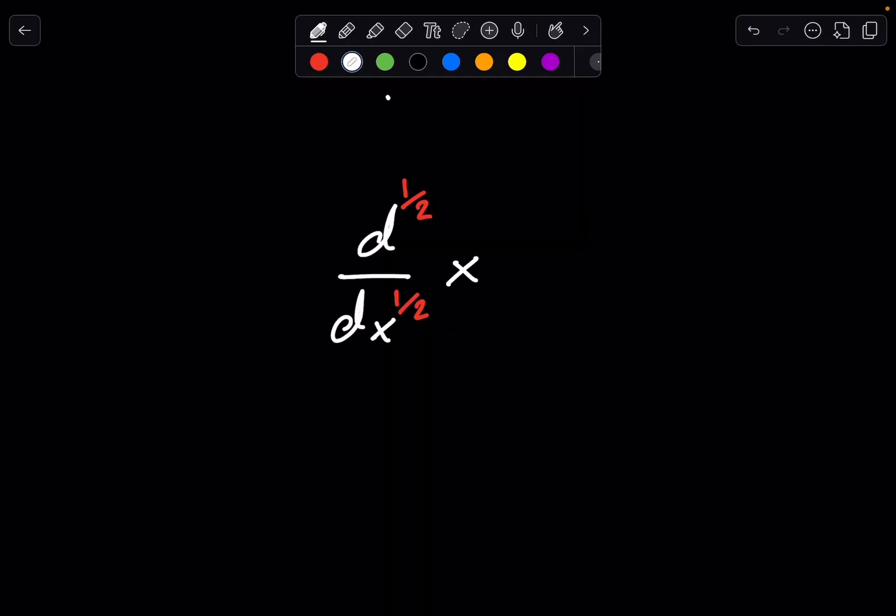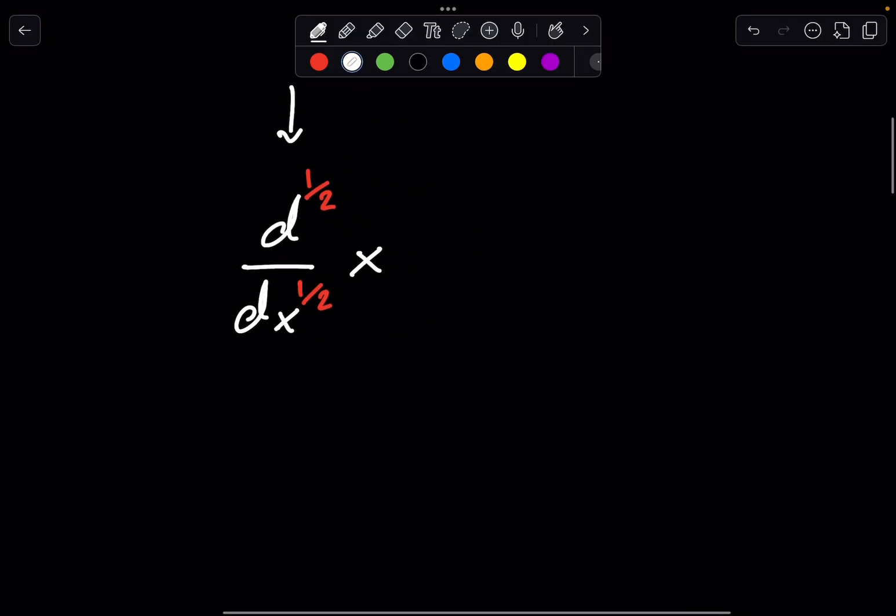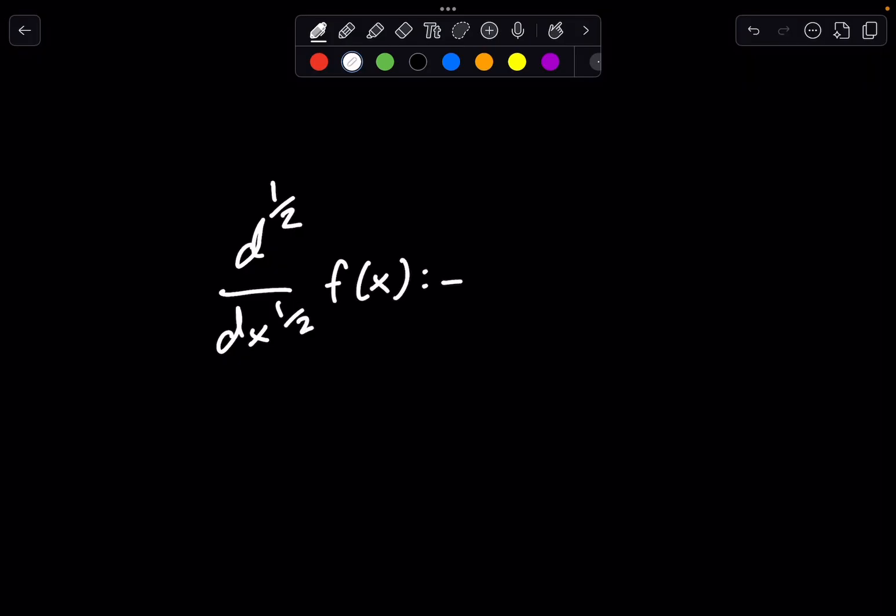Now, a man named Riemann has done a lot of stuff in calculus, but he also created a definition for cases like these, and it's called the Riemann-Liouville definition. I apologize if I mispronounce that, but here's how it goes. So he stated that d^(1/2)/dx^(1/2) of f(x) can be defined using this operator.